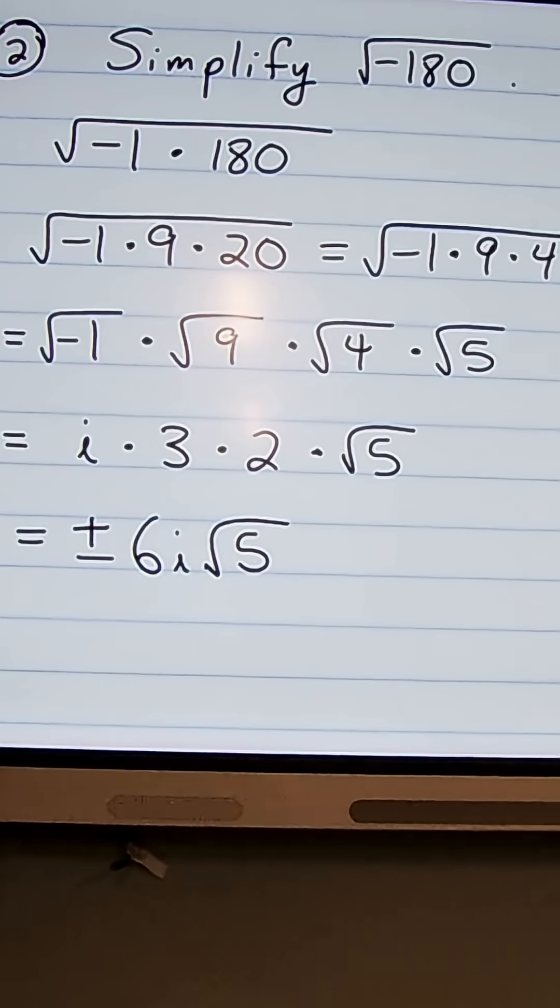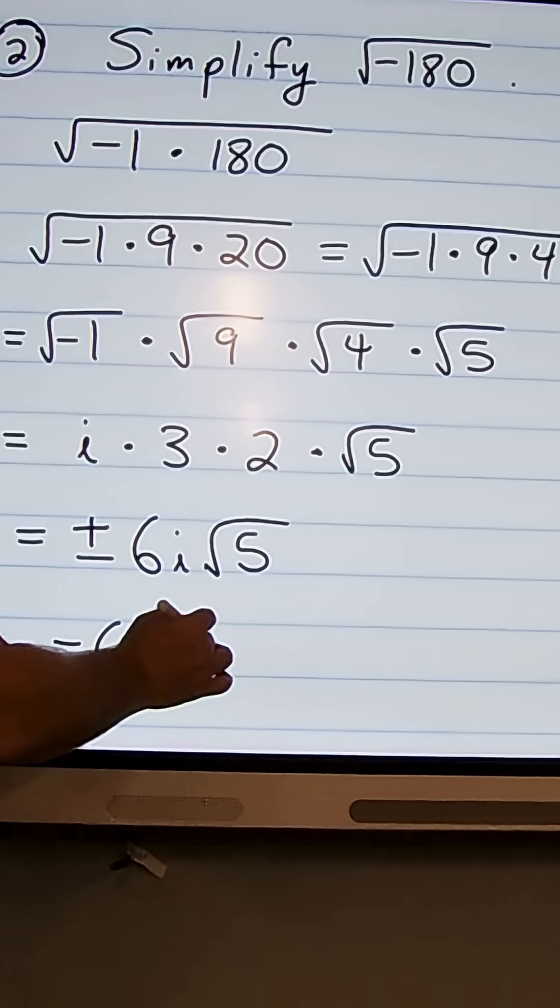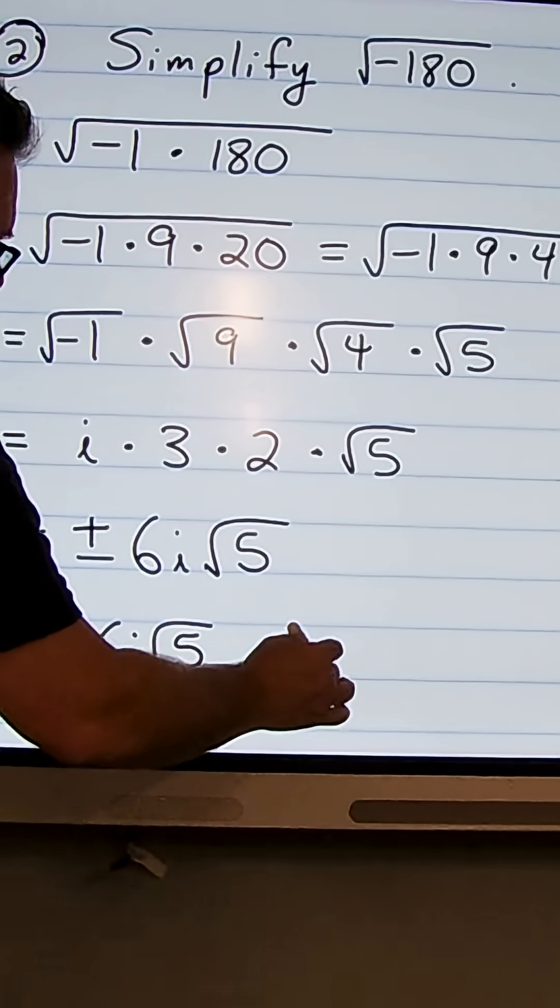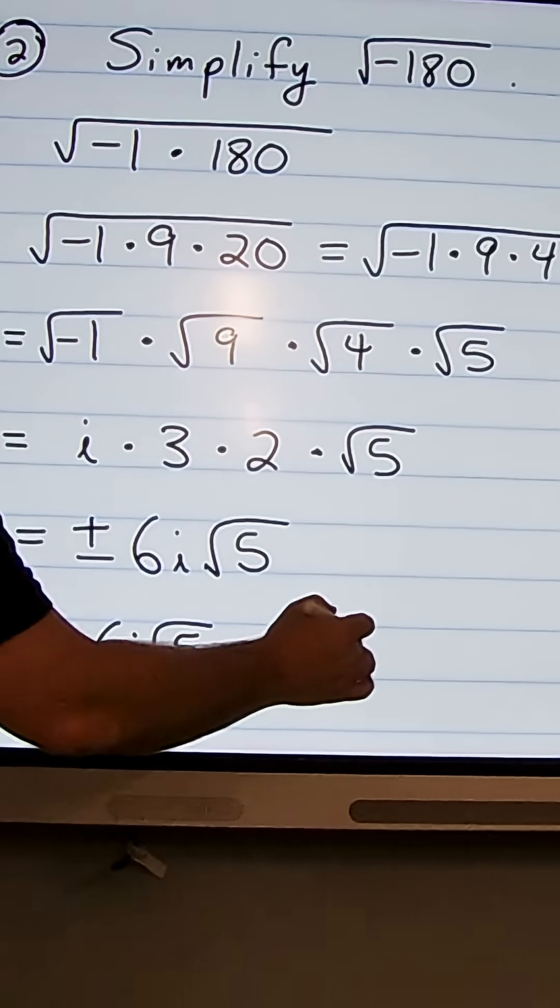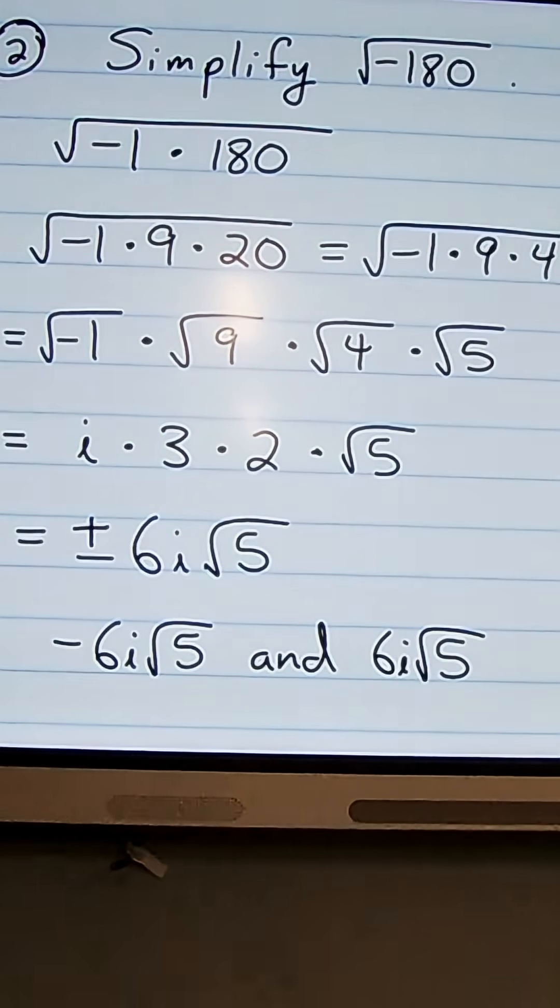So that indicates two solutions. One is the negative 6i times the square root of 5, and also we would have the positive 6i times the square root of 5. And that's it.